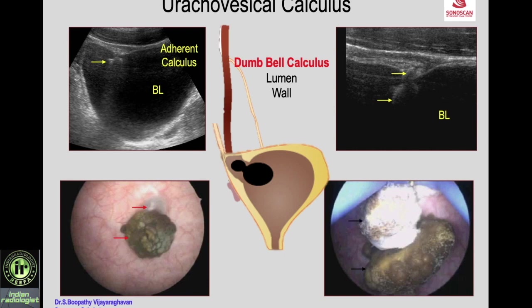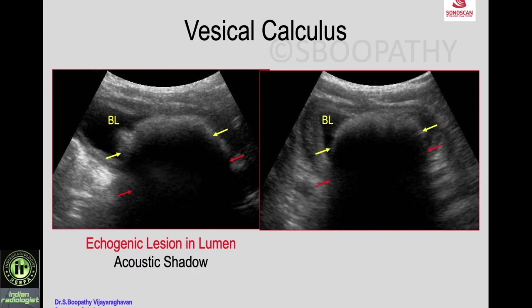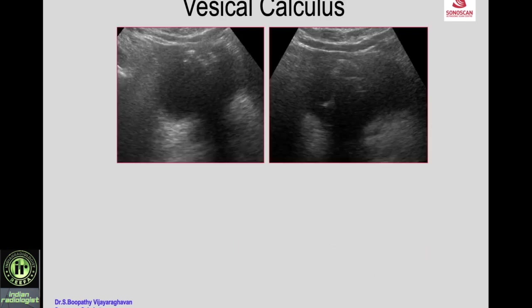Another example of an adherent calculus: a child with an echogenic lesion in the bladder lumen with dense shadowing typical of calculus. But the history is ureteric reimplantation done three months ago for reflux, with urinary tract infection since then. Within three months you cannot expect such a large calculus to form in the urinary bladder. Thinking laterally, this is actually a leftover surgical pad in the urinary bladder — a foreign body.